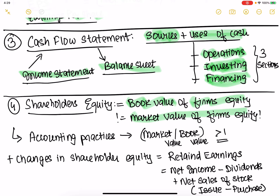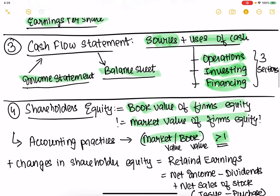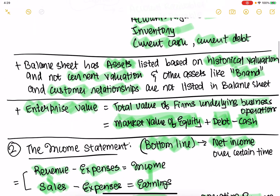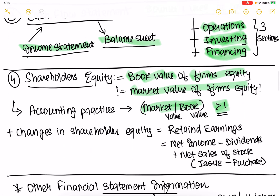Shareholders' equity tells you how much equity has been raised at book value, not market value. Market value has book value plus retained earnings. Typically, market value upon book value is greater than one, because — as we saw from the balance sheet — it doesn't capture the asset's current valuation, and it doesn't capture intangibles like brand and customer relationships.